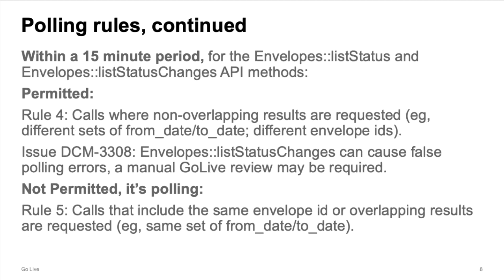There are special rules for the two API methods that enable you to get status for a list of envelope IDs with one call. Rule four: it is permitted to make multiple calls within a 15-minute period if non-overlapping results are requested — for example, different sets of from-date and to-date parameters or different envelope IDs. However, the current caveat to rule four is that issue DCM-3308 may cause your GoLive test to not pass, since the system may mistakenly think that you are polling via the API method. If you're sure that you're only requesting non-overlapping results, you can request a manual review of your GoLive test results in this case.